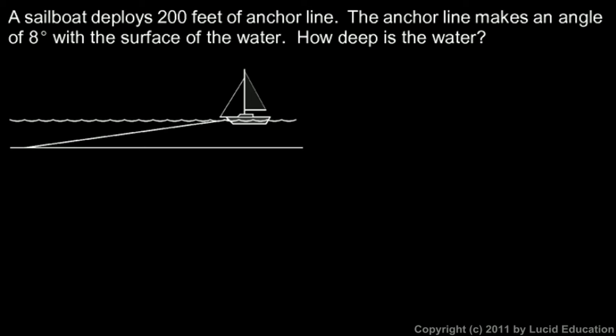Okay, here we're told that a sailboat deploys 200 feet of anchor line. So this is the anchor line, and the anchor would be down here.